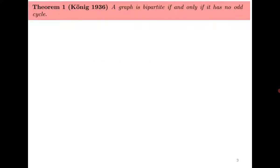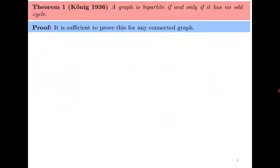We begin with the following theorem: a graph is bipartite if and only if it has no odd cycles. We assume that the graph is connected, because if it is not connected then we have to prove for each component that it is bipartite. So instead we assume there is only one component, which is why we assume the graph is connected.